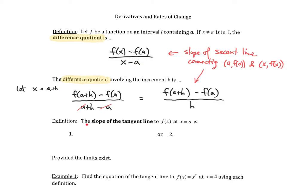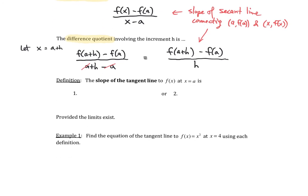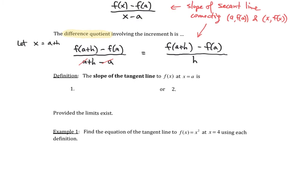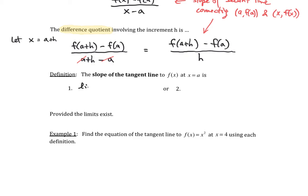When we talk about the slope of a tangent line to f of x at the point x equal to a, this slope is really going to be defined in terms of a limit. The slope of the tangent line is the limit as x approaches a of f of x minus f of a divided by x minus a, or the limit as h goes to 0 of f of a plus h minus f of a divided by h.